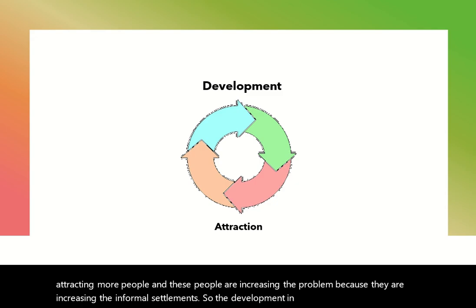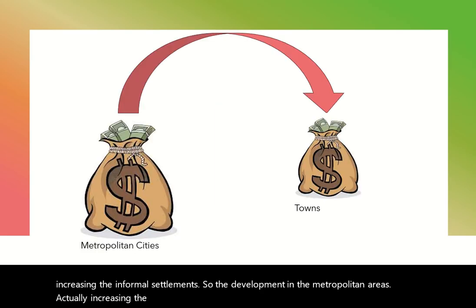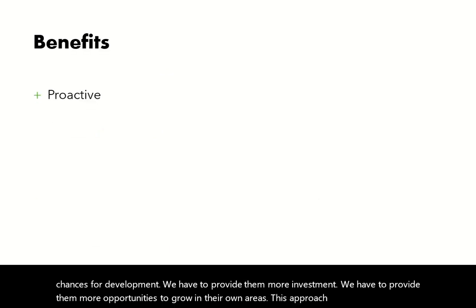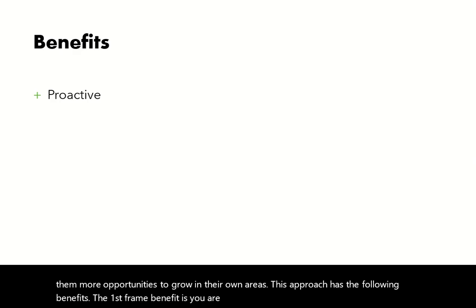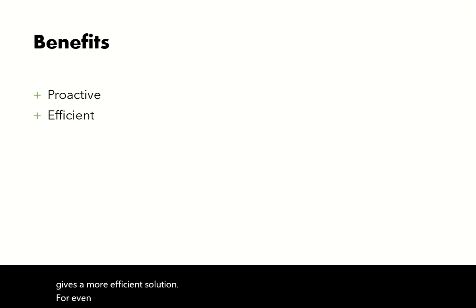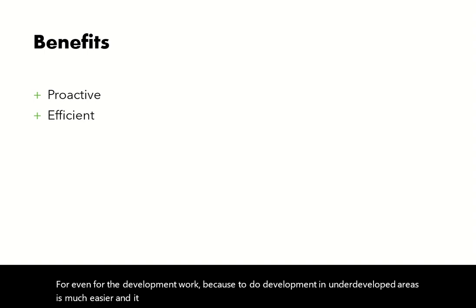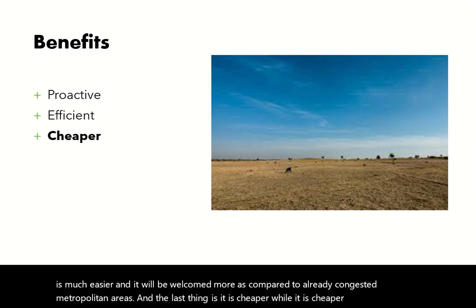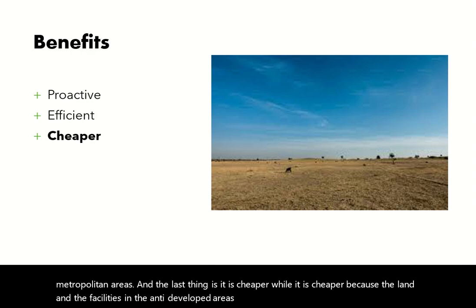The development in metropolitan areas is actually increasing the problem. So what do we need to do? We need to shift our focus towards underdeveloped areas. We have to give them more chances for development, provide more investment, and provide more opportunities to grow in their own areas. This approach has the following benefits: first, you are proactively tackling problems that would otherwise arise in the metropolitan areas. Second, it gives a more efficient solution for development, because developing undeveloped areas is much easier and more welcomed compared to already congested metropolitan areas. And lastly, it is cheaper, because land and facilities in undeveloped areas cost much less than in metropolitan areas.